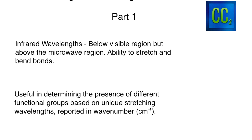Infrared waves, on an energy scale, are below the visible region. Think about the term infrared — red is the very cusp of the visible light region we can see, and it ranges down into the microwave region. In the microwave region we talk about the ability to rotate molecules, and once you move up into IR you have the ability to stretch and bend molecules.